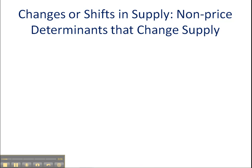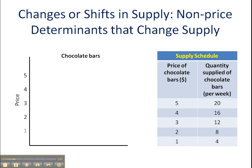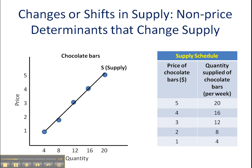First, a very brief review. We're going to construct a supply curve based on the numbers given on our supply schedule. It looks like we're going to be graphing the supply of chocolate bars — the chocolate bar market — and the ability and willingness of producers to supply chocolate bars. We note that as the price of chocolate bars goes up, producers are more willing and able to make more chocolate bars available. I've plotted my points, found the line of best fit for my upwardly sloping supply curve, and labeled it S for supply.